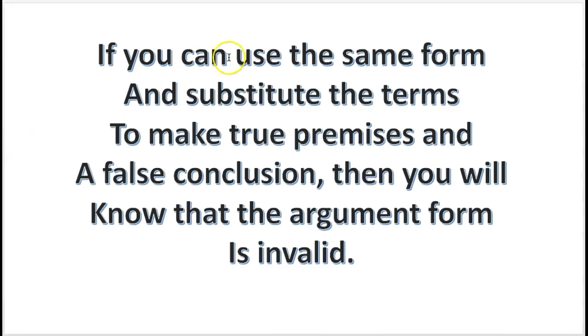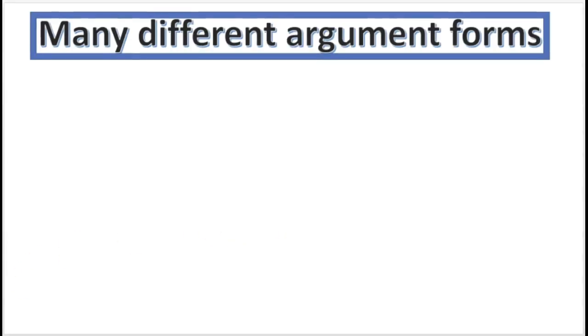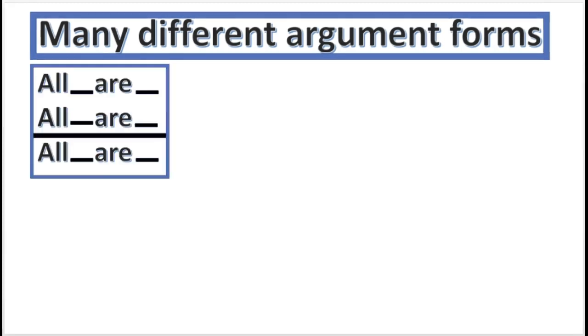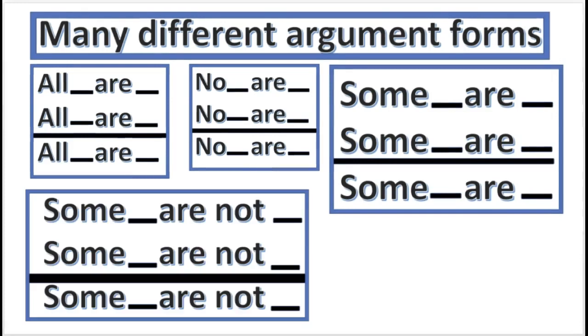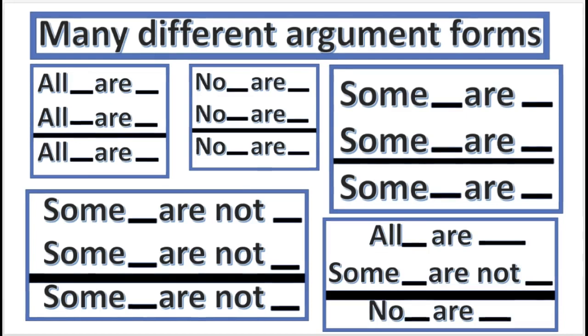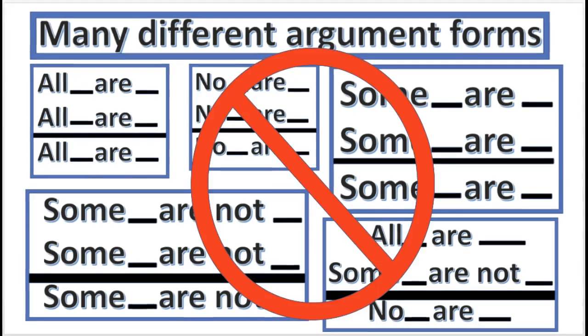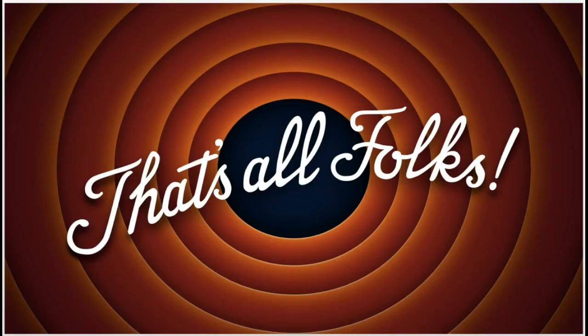Remember, if you can use the same form of the argument that someone presents and substitute the terms to make true premises and a false conclusion, then you'll know that the argument is invalid. There are many different argument forms — don't get overwhelmed, but you'll learn and know all about these shortly: all are this, no are that, some are this, some are that, some are not this, some are not that, and arguments that are mixed up. You've got a handy little method to prove any argument form is invalid by using the counterexample. You can also find practice problems in newspapers, magazines, on television, commercials — watch some politicians. Write out the argument form and substitute the terms to see if you can prove it invalid. Thank you so much. See our other logic videos, post any questions or comments below. Have a great day.